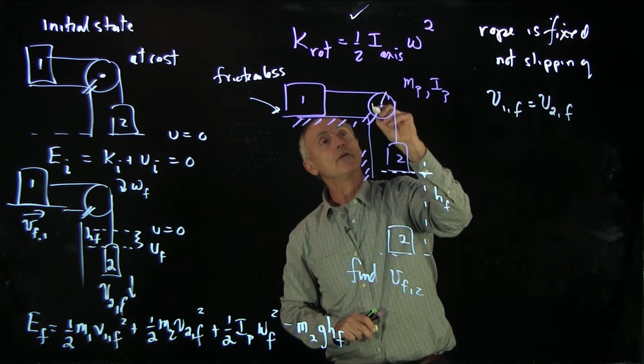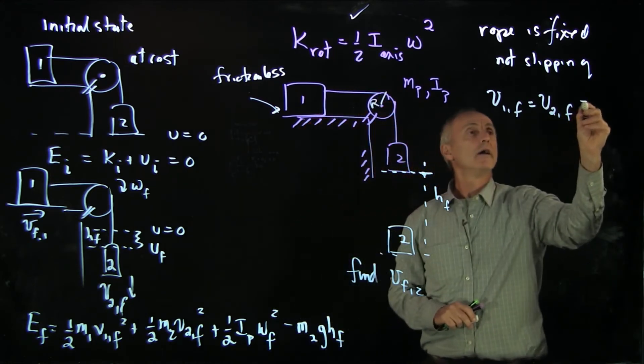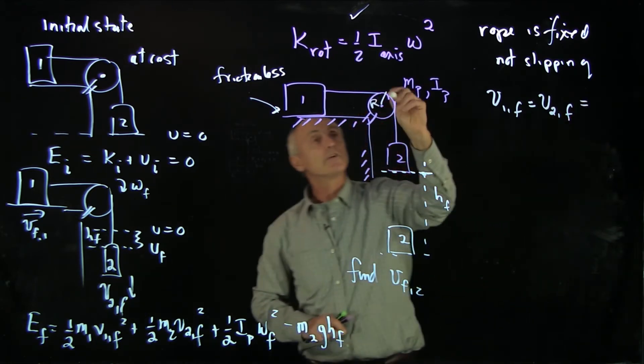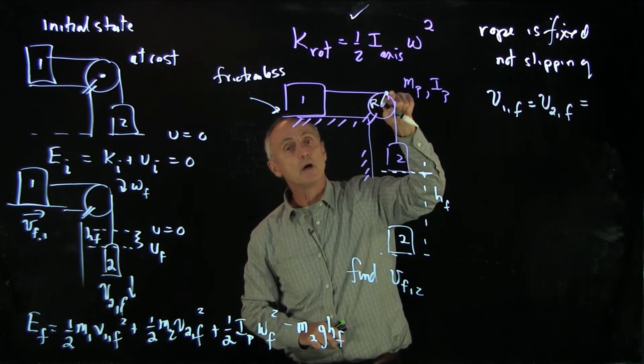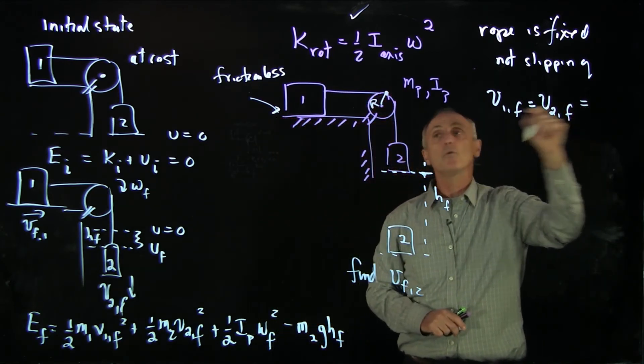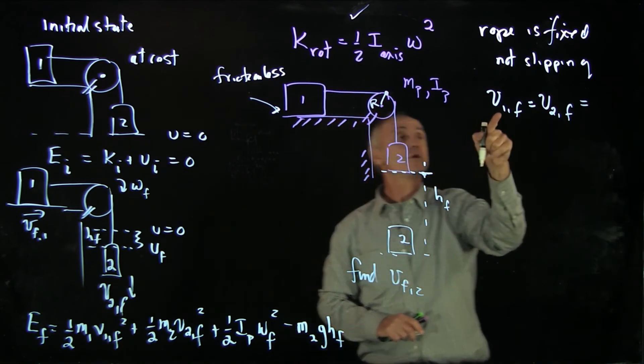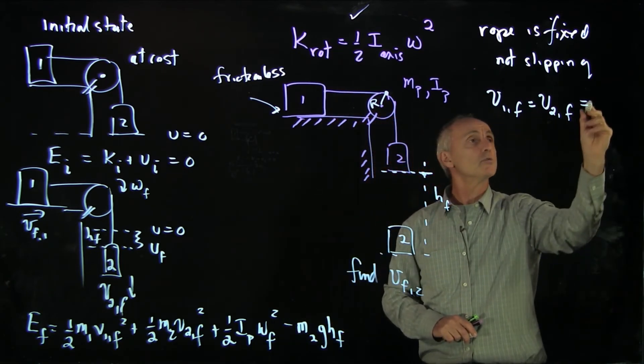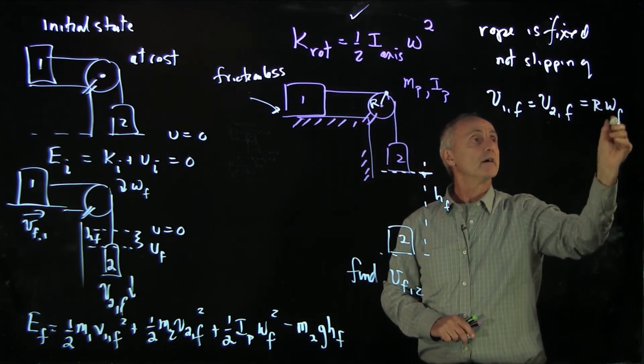Now what about the pulley? If this is radius r, we know that the velocity of a point on the rim of a disk is moving with the speed of the rope, which is the speed of block 1 and block 2. So that's r omega final.